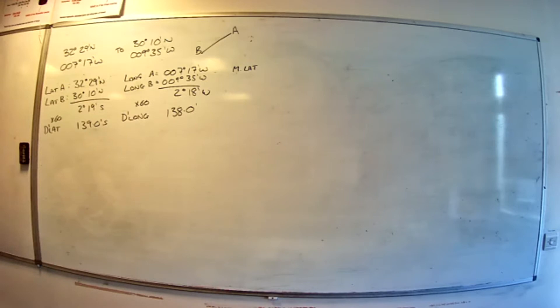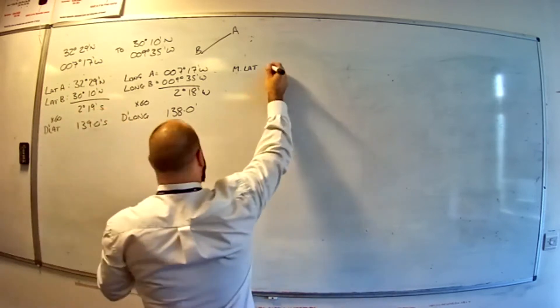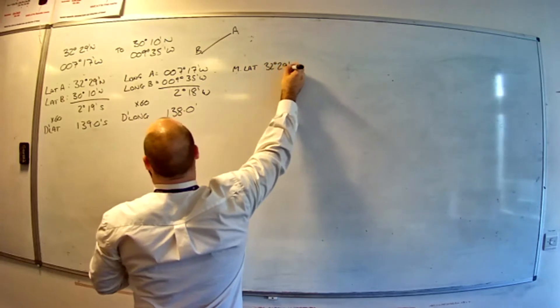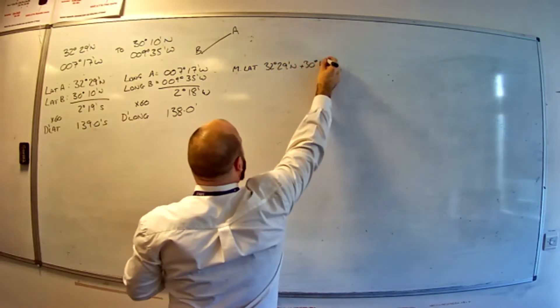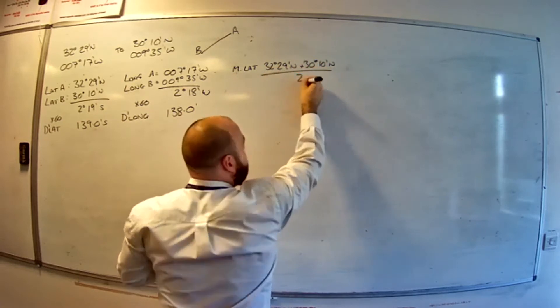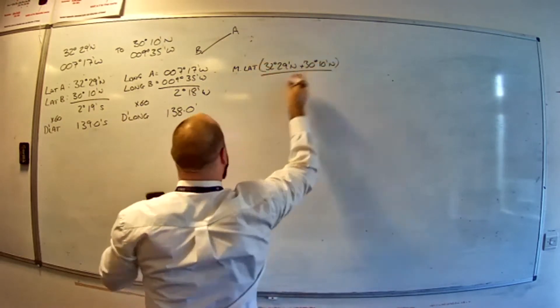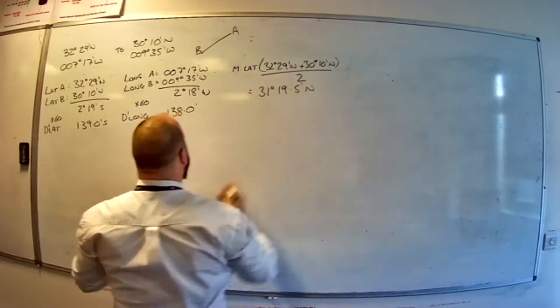There's a couple of ways to do it. The easiest way is just add the two together. 32 degrees 29 minutes plus 30 degrees 10 minutes, then divide by 2. Get 31 degrees 19.5 minutes. So 32 degrees 29 minutes north plus 30 degrees 10 minutes north, divide by 2. And then that will give you 31 degrees 19.5 minutes north.